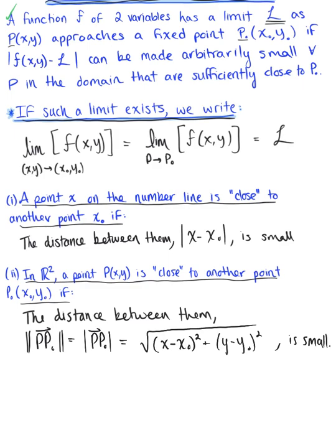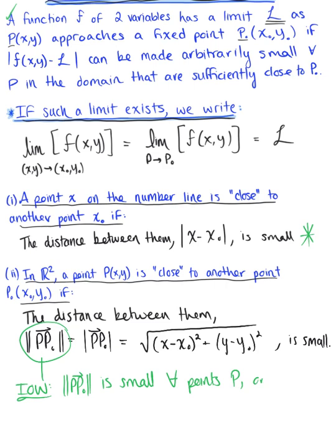Think back to the single variable case: x can only approach x0 from the left and the right. That's not going to hold true here with multivariable functions. This distance is small for all points p on all sides of p0. We're not just coming from the left and the right — we could come from above or below, at a diagonal, along a parabola, or in every direction on all sides of p0.